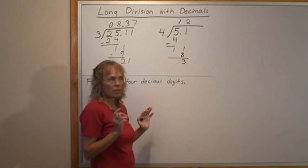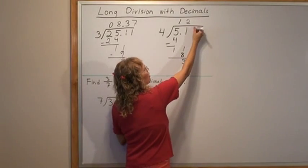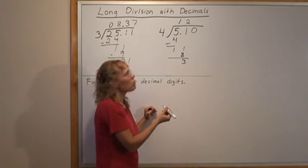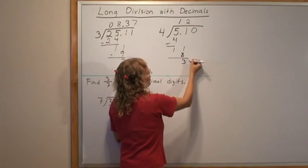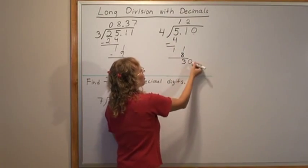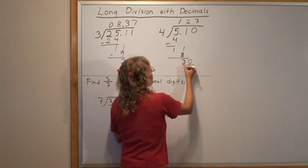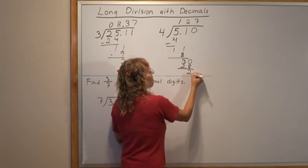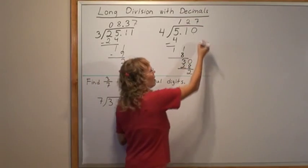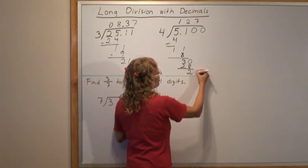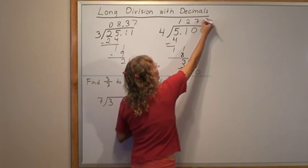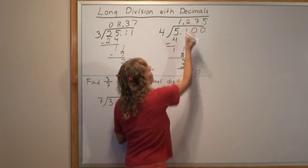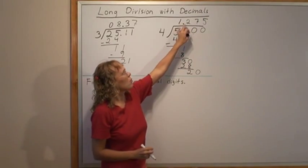However, I can continue this division if I put here and tag on some decimal zeros. Let's put a zero here and drop that down here. 4 goes into 30, 7 times. There's still a remainder. But if I add another decimal zero and drop that down, 4 goes into 20 evenly, and now I got an even division. And I put the decimal point in the answer.